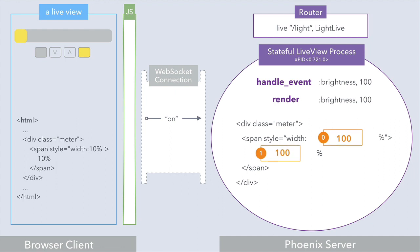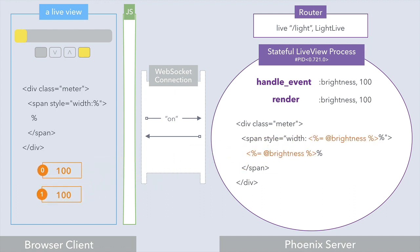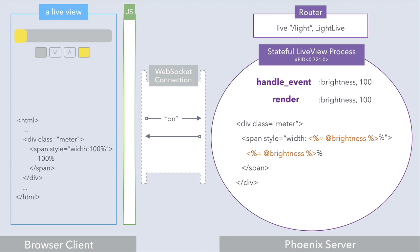This is made possible because live view templates get compiled to Elixir code. So what does live view send to the browser? It doesn't send the static part again — that's already cached in the browser. Only the new dynamic values and their indexes get sent over. The live view JavaScript weaves the static and dynamic parts together, then uses the morph DOM library to efficiently patch the DOM to turn the light on.